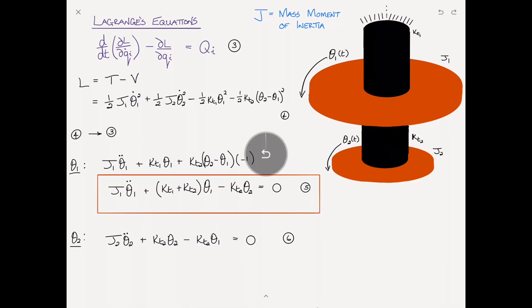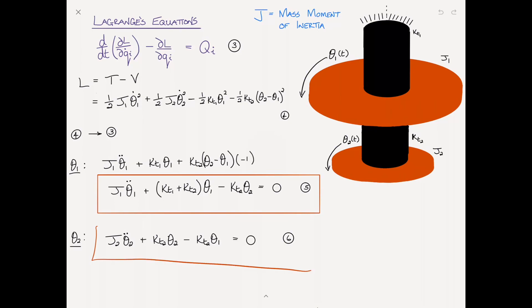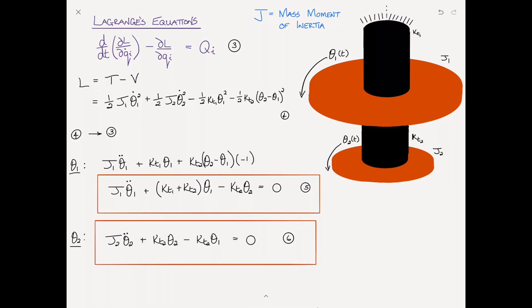This is exactly what we found before using Newton's second law. So there you go — two different ways of finding the equations of motion for the torsional two-degree-of-freedom system. I hope you found something interesting and useful in this video. If you did, please go ahead and smash the like button below, or better still, subscribe to the channel and you'll be notified of all new updates and releases. Thank you very much for watching, and I'll catch up with you in the next video.